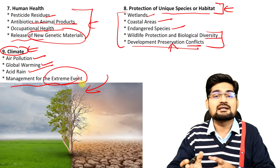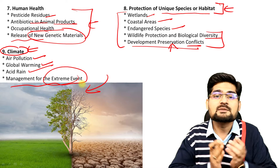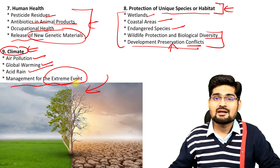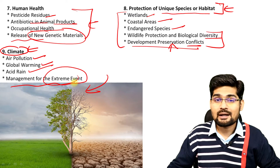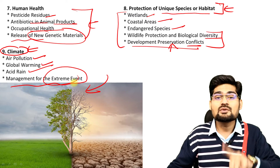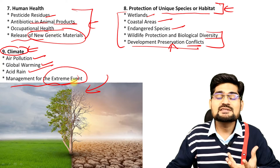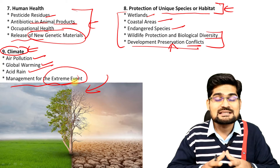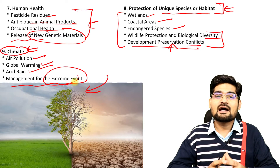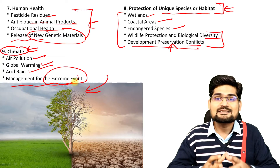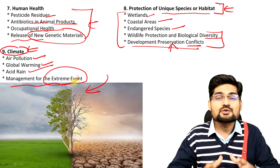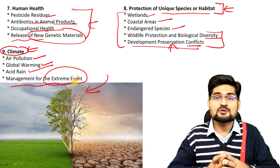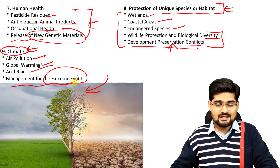Most of the impact of global change is being faced by rural areas. And remember, if rural areas are not doing well, urban areas will not do well either — because the surplus from rural areas comes to urban areas. Food security, economic security — it's all dependent upon how we are doing in the rural sector, especially in a country like India where traditional agricultural systems and monsoon dependency are still prevalent.